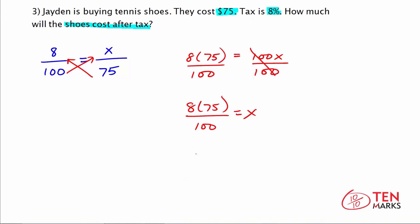You have 8 times 75 over 100 equals X. Simplify the numerator by multiplying. 8 times 75 is 600 divided by 100 equals X. 600 divided by 100 is 6, which means $6 get added on to the cost of the shoes, which is 75. So, you have $75 plus 6 equals 81. That's how much Jaden's going to have to pay after tax.